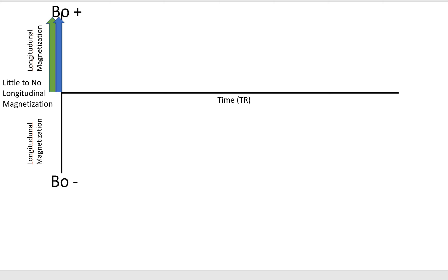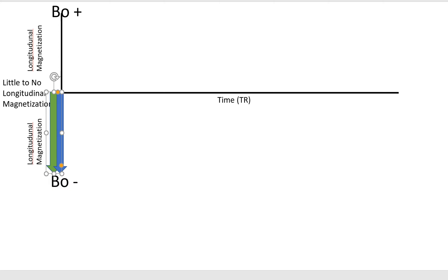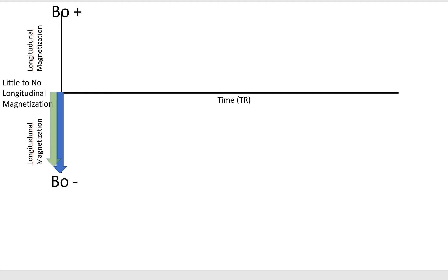When a 180-degree inversion pulse is applied, these tissues flip into the negative longitudinal plane, B0 negative. Each tissue will then recover at a different rate — it's always easier to go with the direction of the main magnetic field, like swimming with the flow of a river rather than opposing it. All tissues lose negative magnetization, cross what's called the null point, and regain positive longitudinal magnetization if given enough time. The fact that different tissues recover at different rates is the reason we all have jobs in MRI.